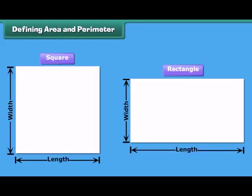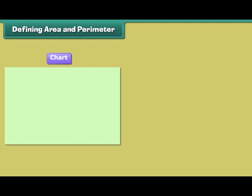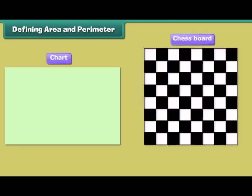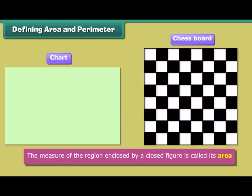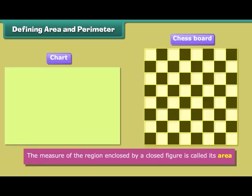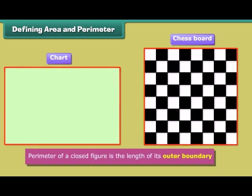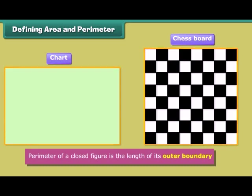We already know about closed figures like squares and rectangles. For example, this chart paper is a rectangular chart while the chessboard is a square. The measure of the region enclosed by a closed figure is called its area. Perimeter of a closed figure is the length of its outer boundary. Let us now find the ways of calculating area and perimeter of rectangles and squares.